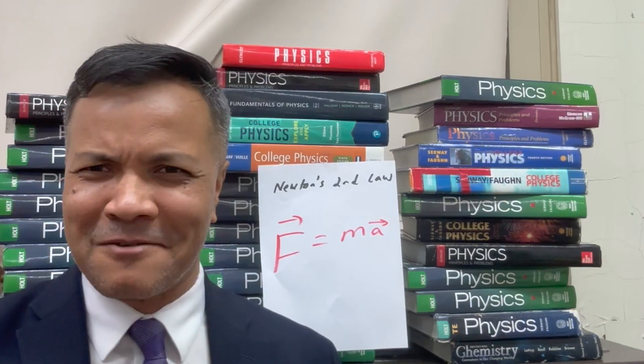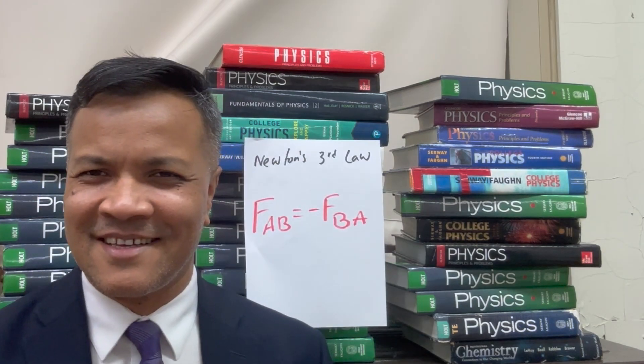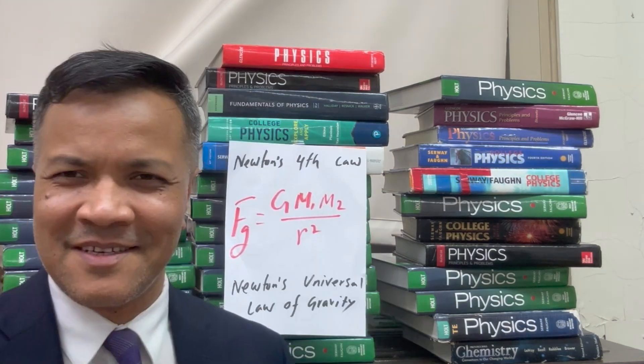All right, everybody. Very exciting. Today, finally, you're going to go over Newton's laws of motion, and there are four of them. Number one: sigma F is equal to zero. Number two: F equals ma. Number three: F-AB is equal to negative F-BA. And number four: F-G is equal to G M1 M2 over R squared.